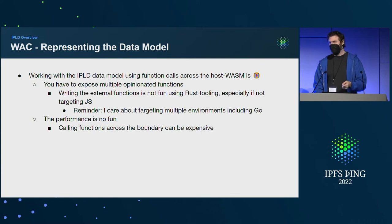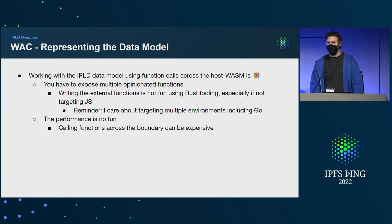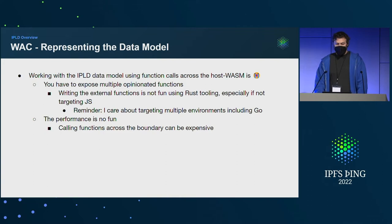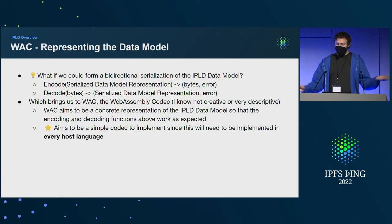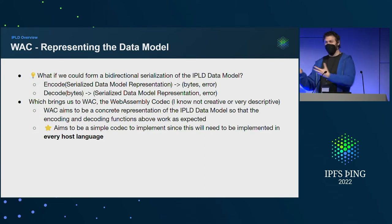The Rust tooling is mature but not helpful if you're not targeting JavaScript — you're sort of left to your own devices. I work on a program written in Go called Kubo that some of you may have used, and that's sad for me if I want to make it work in that environment. Even if all the tooling was there, performance is not good because you have to keep calling across the boundary over and over again. So the question was: what if we could form a bidirectional serialization of the IPLD data model and move between the serialized representation and bytes?